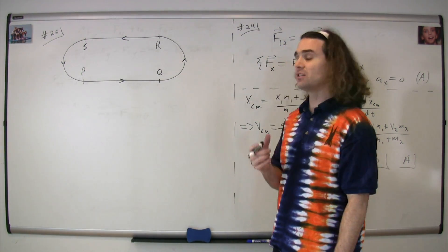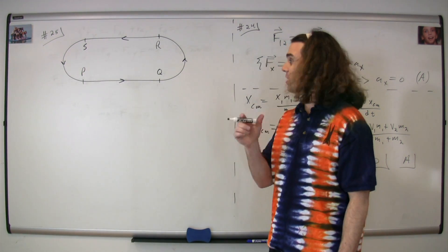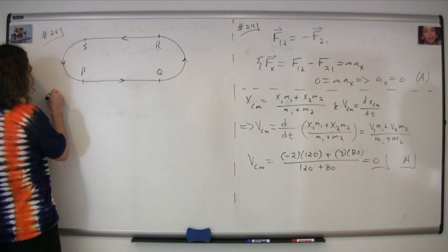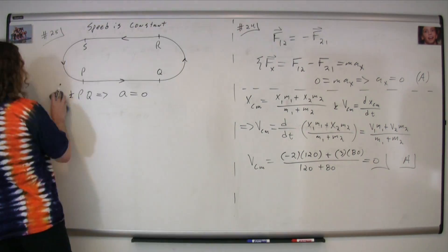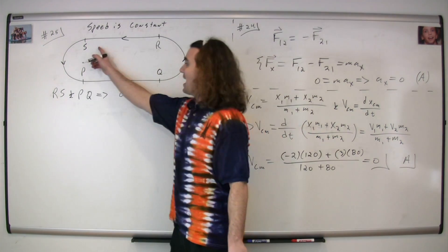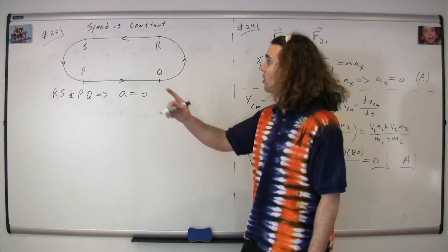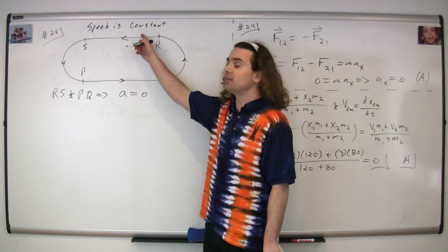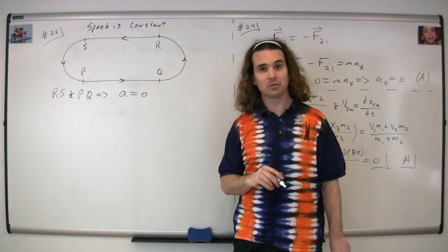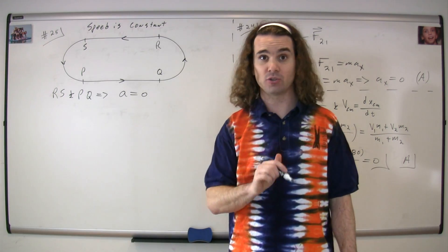So let's take a look at different segments. We're going to start with s, r, and p, q. Now, from r to s and from p to q, the figure is moving in a straight line, and we know it's moving at a constant speed. Therefore, the acceleration is going to be equal to zero on those two segments.